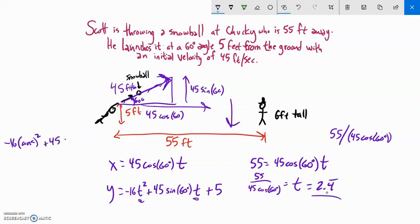In my calculator, I'm going to go negative 16 times answer squared plus 45 sine 60 times the answer plus 5. That should give me the height at that time.